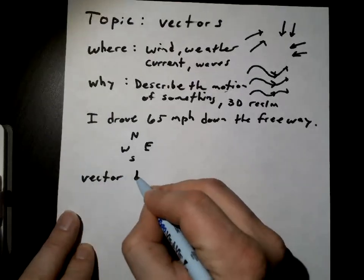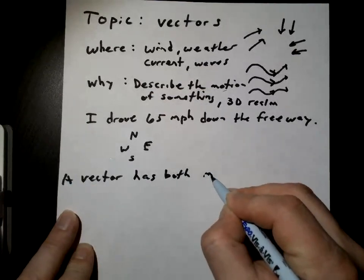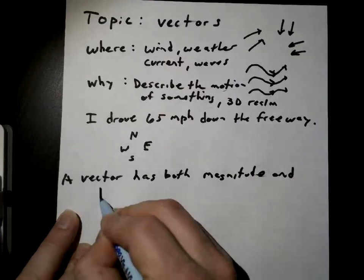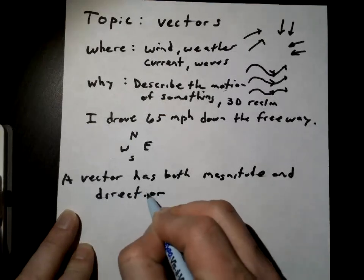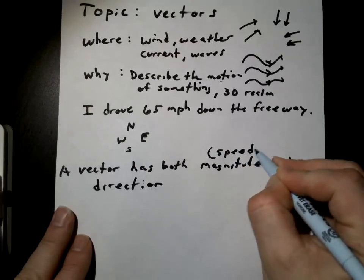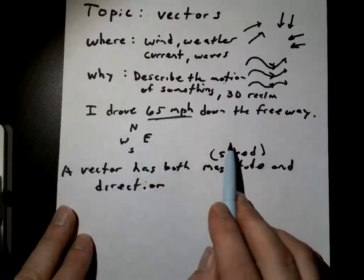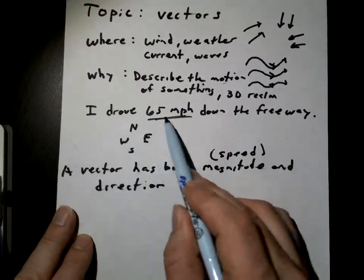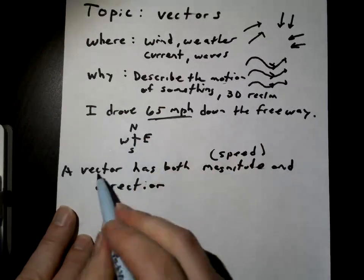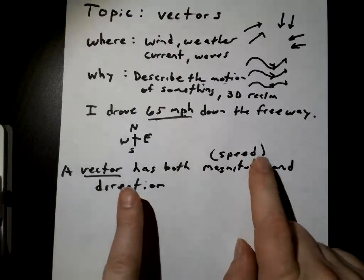A vector has both magnitude and direction. Magnitude is kind of like the speed — 65 miles per hour is the speed. The direction is well, what direction: north, east, south, or west. So a vector has to have a speed and a direction. That's the definition of a vector — you need both.